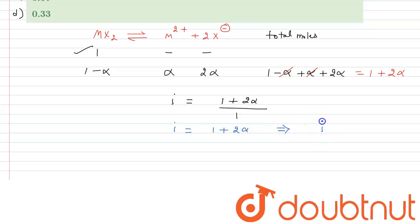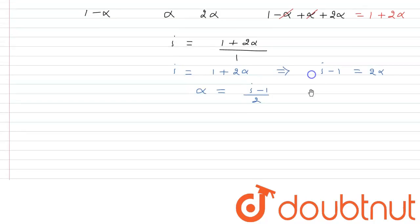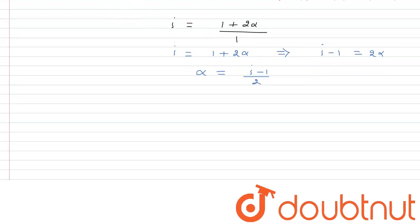From this, i − 1 = 2α, which gives us the degree of dissociation: α = (i − 1) / 2. We have been given the value of i equal to 2, so we can now substitute and find alpha.